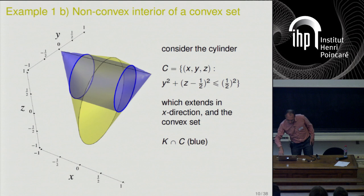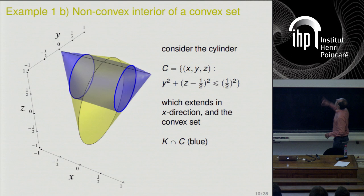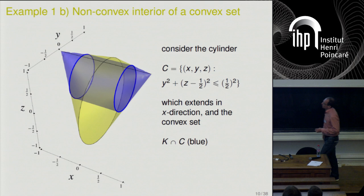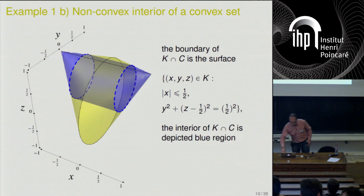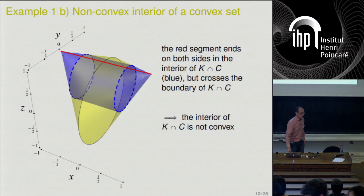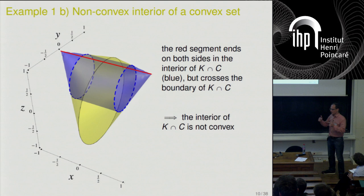We can also study a cylinder. This cylinder cuts out a section of the object. Looking at the interior: the boundary is just a cylinder surface bounded by two circles, and the remainder is the open set. If you put a line through the top, the line intersects the open set on the sides, but in the middle it intersects the boundary — so this set is certainly not a closed interior.